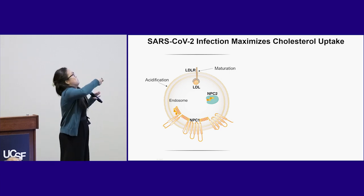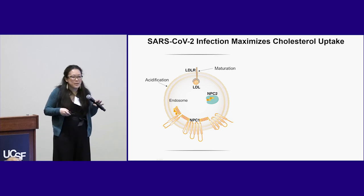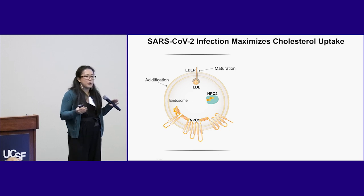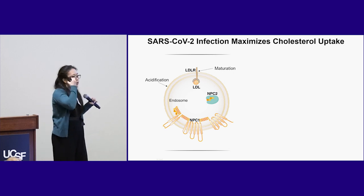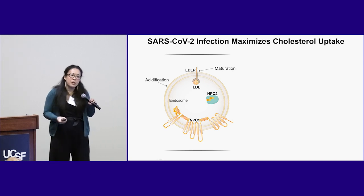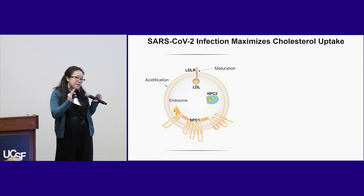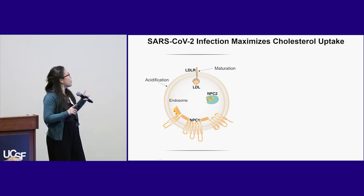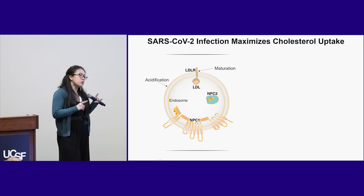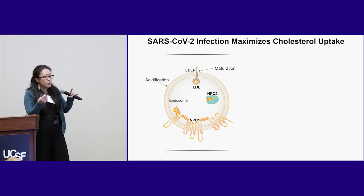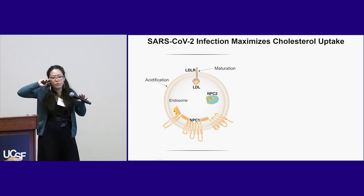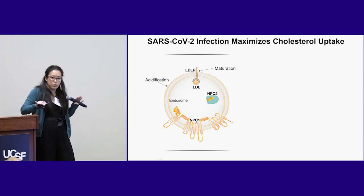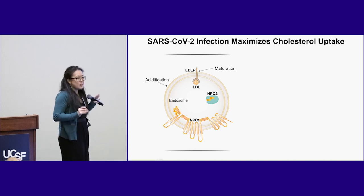We need to discuss how LDL gets into the cell. LDLR is the primary receptor for LDL uptake. It's a transmembrane protein made in the ER, transported through the Golgi where it's heavily glycosylated to make a mature form on the plasma membrane. Once LDLR is bound to LDL, it's endocytosed, that endosome acidifies, and this acidification causes a conformational change to release the LDL from its receptor and allow hydrolysis of LDL into free cholesterol for cellular use. Two cholesterol chaperone proteins are also essential for this process.